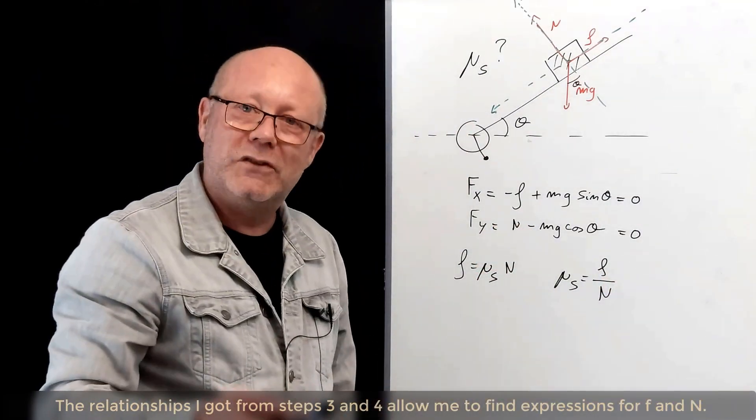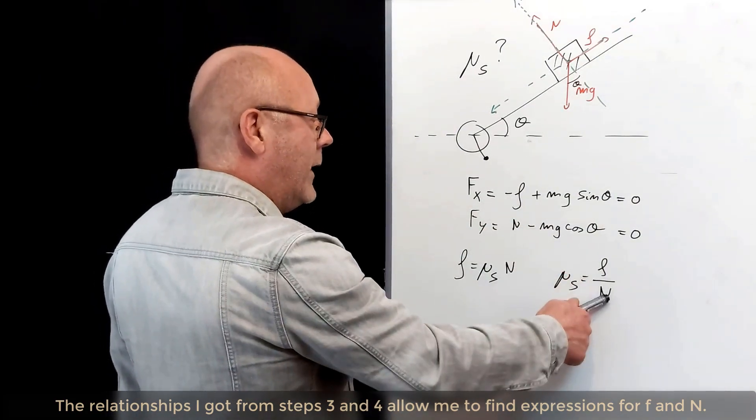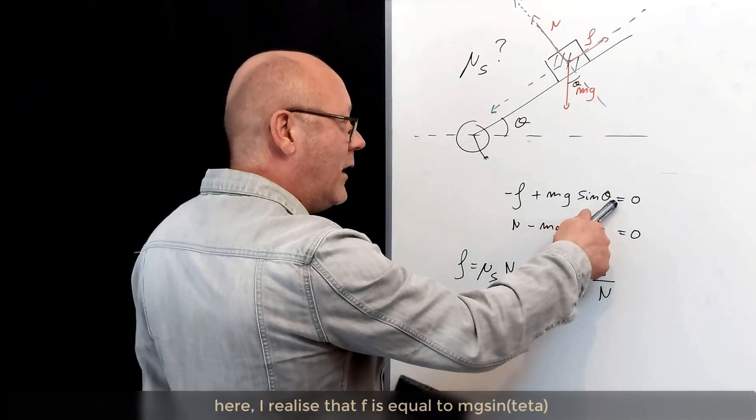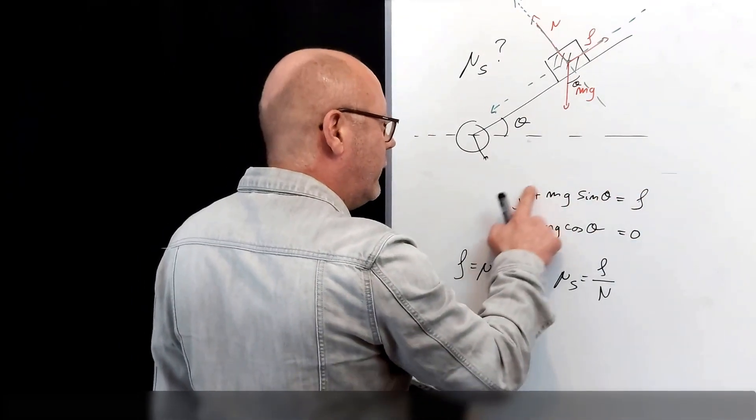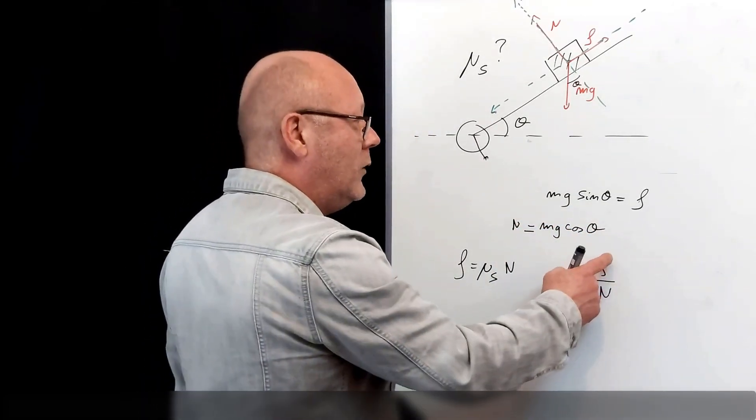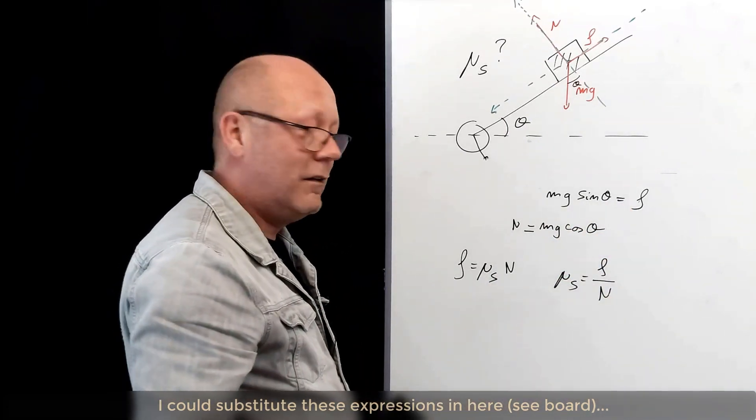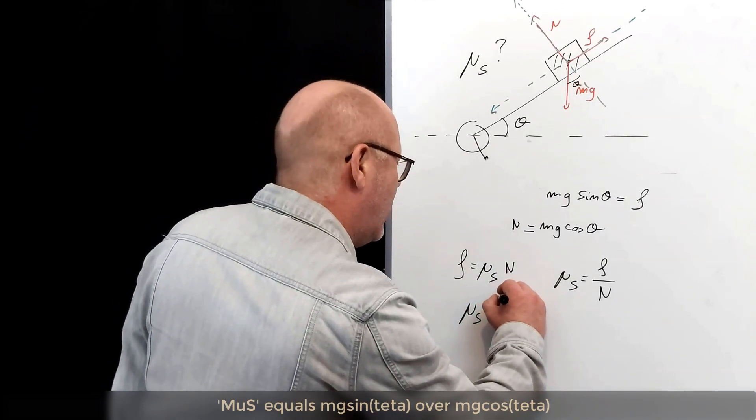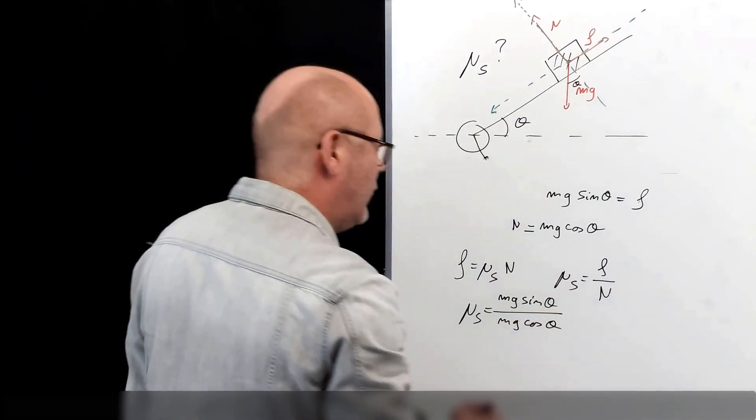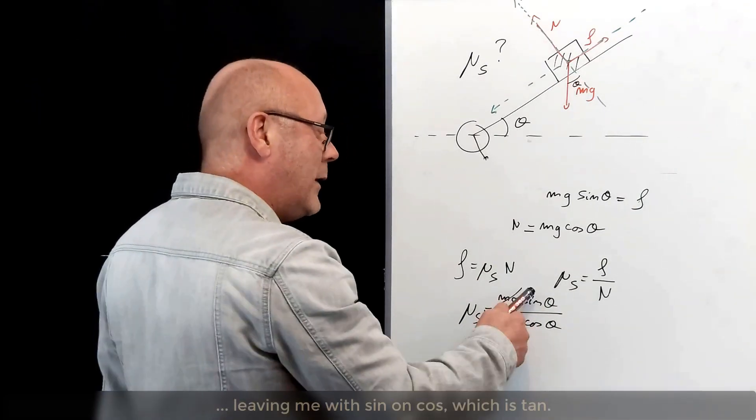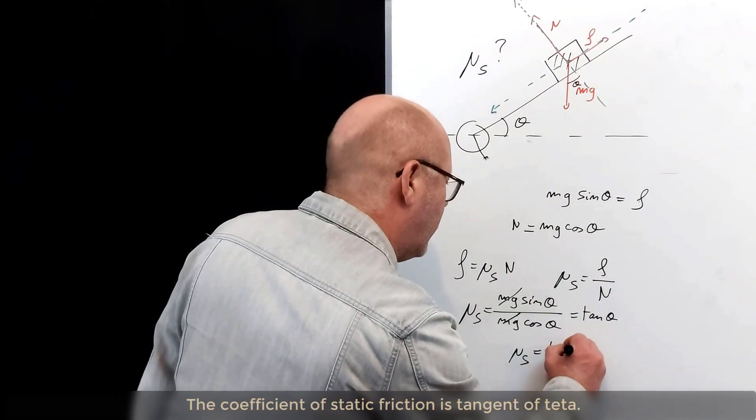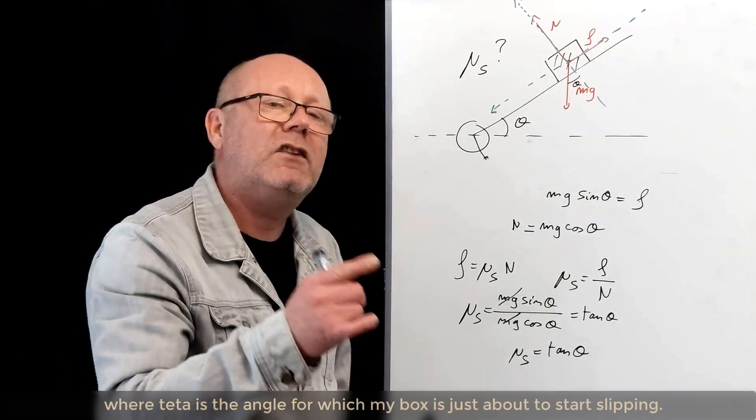Now, the relationships I got from step three and four allow me to find expressions for f and N. Look. Here, I realize that f is equal to mg sine θ. If I put f the other side, I just get this. Same thing for N. If I put mg cos θ the other side, I get N equals mg cos θ. I could substitute these expressions in here. Right? Let's do that. Mu s equals mg sine θ over mg cos θ. The mg is cancelled. Leaving me with sine on cos, which is tan. The coefficient of static friction is tangent of θ, where θ is the angle for which my box is just about to start slipping.